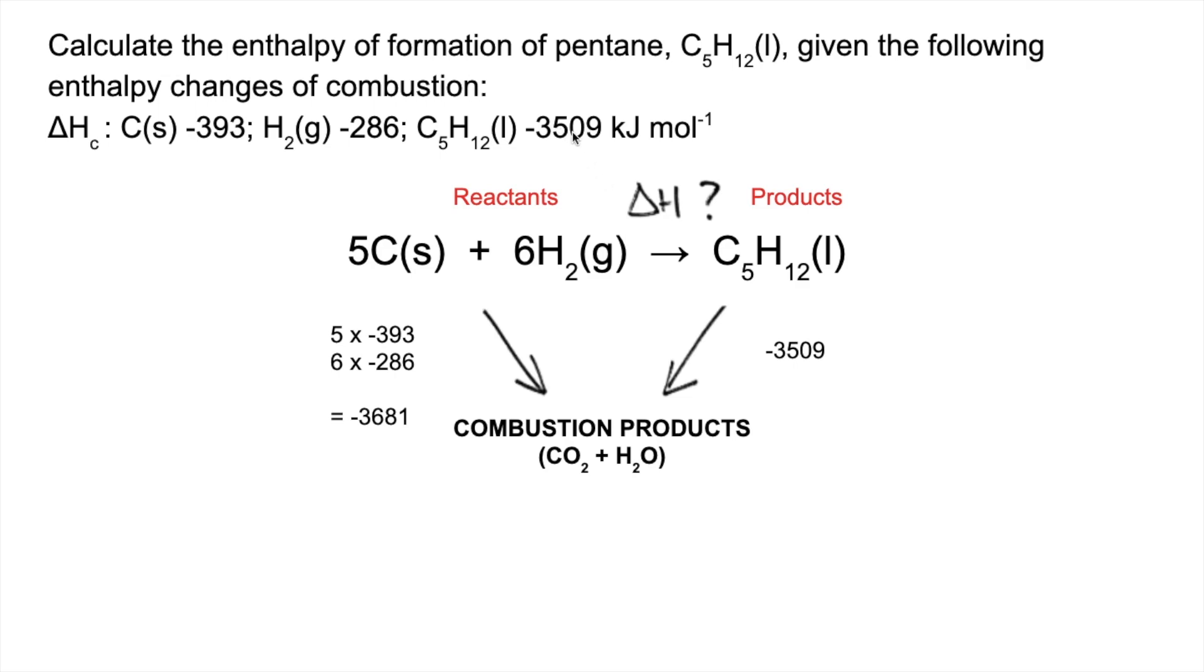We'll apply the vector approach now. There's one route, that's the one we want - the ΔH unknown. The other route is going that way, and you can see straight away this arrow is going in the wrong direction. So all we're going to do is take the sum of the enthalpy changes of combustion of the reactants and subtract from that the enthalpy change of combustion of the product. Plugging the numbers in, we get an enthalpy change for this reaction - the enthalpy change of formation of pentane at -172 kilojoules per mole.